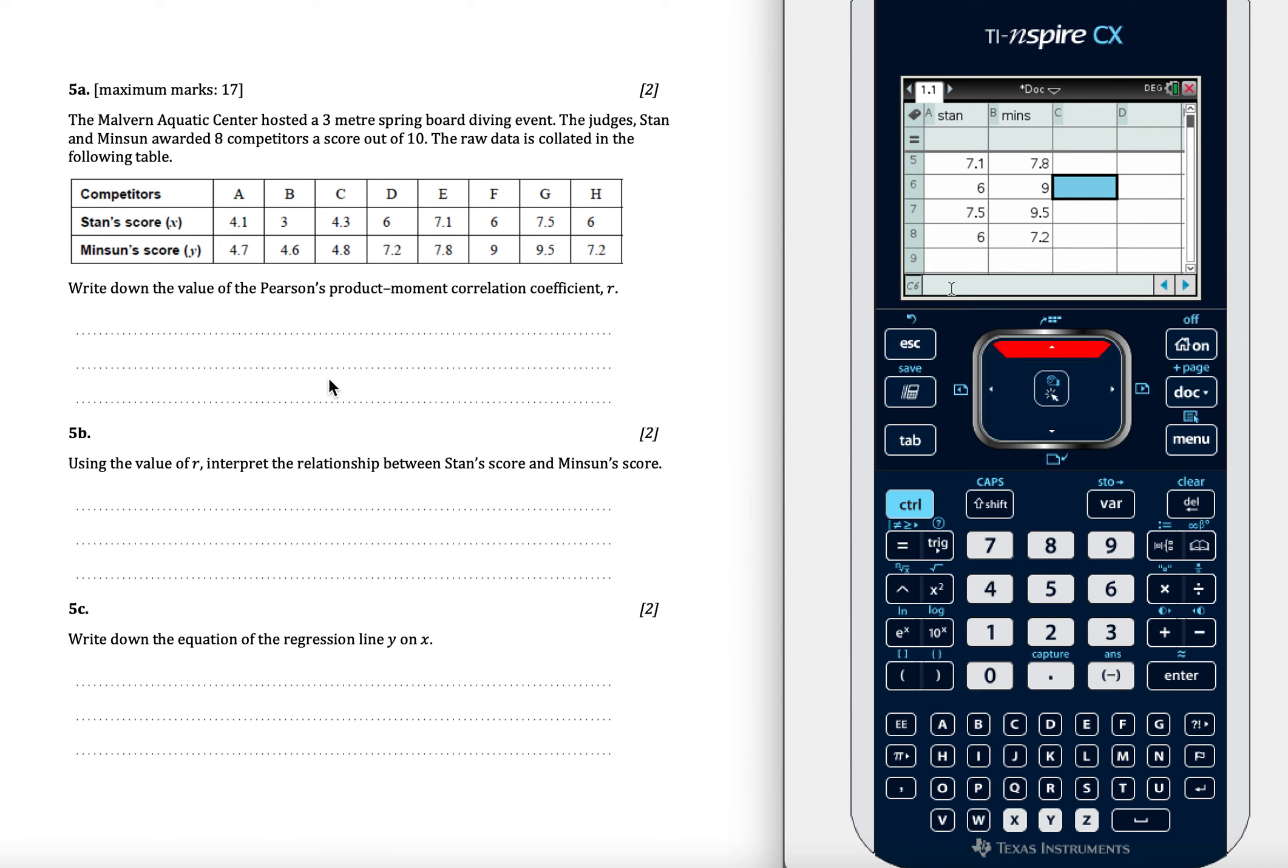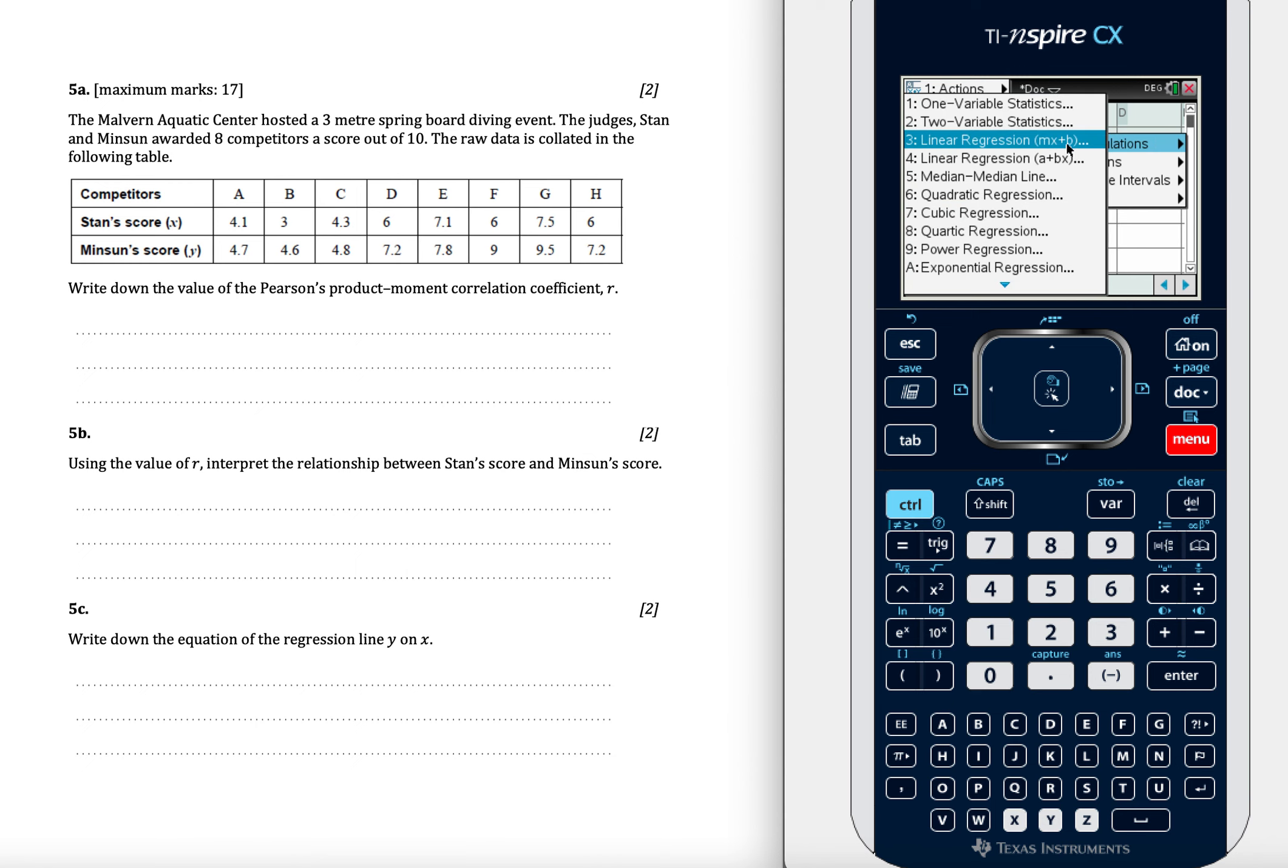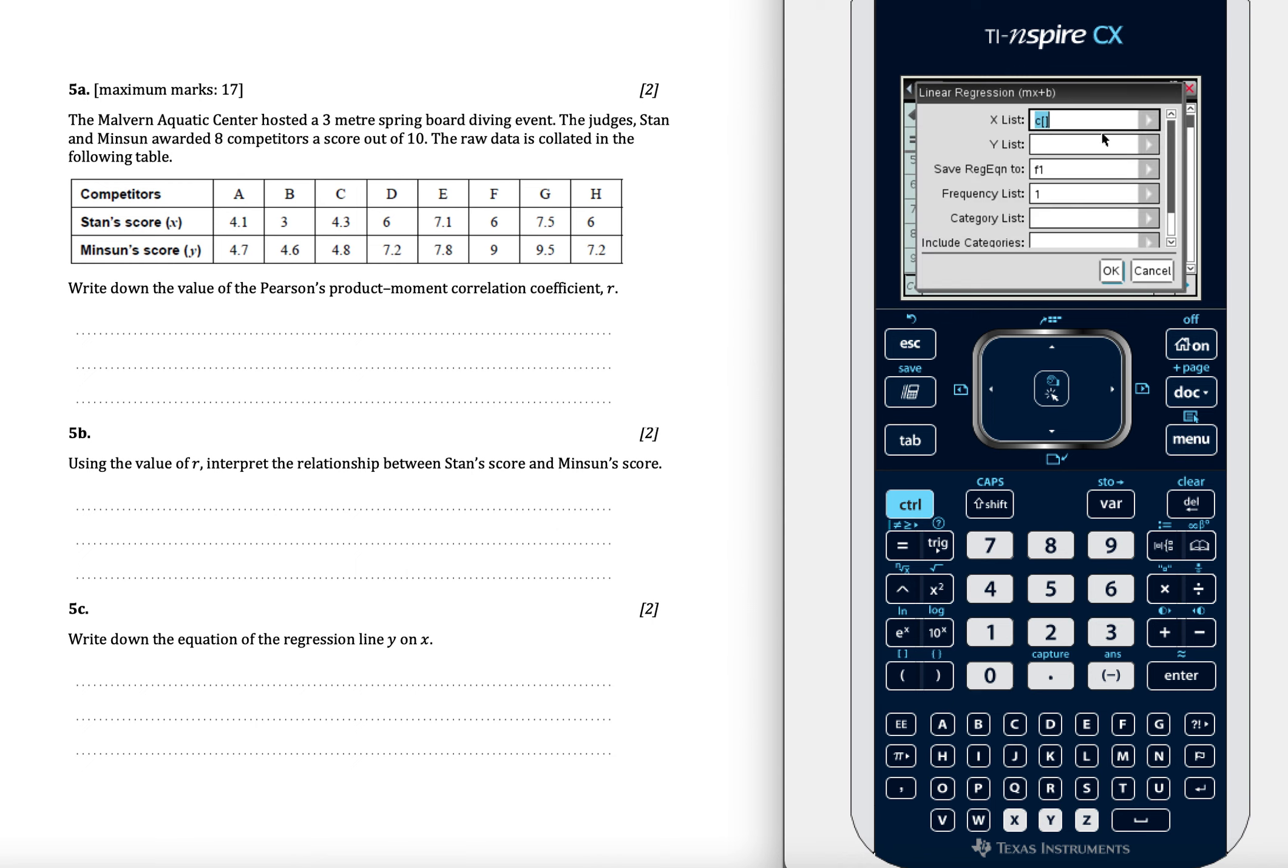And now we just need to find Pearson's Product Moment Correlation Coefficient. So we're in the menu, statistics, it's a stats calculation. It's a two-variable statistic, or we can do it within linear regression. And because if we read through the question, it says R and the equation in the regression line, let's just do the linear regression. Let's use MX plus B rather than A plus BX, because it'll be in a form that we're used to. Where Stan is our X value, MINS is our Y value, which is stated in the question.